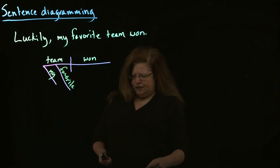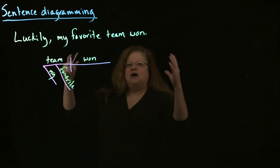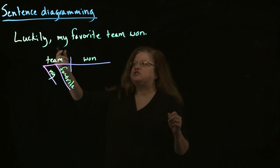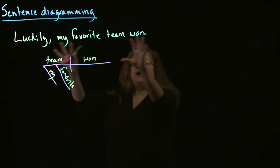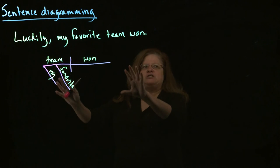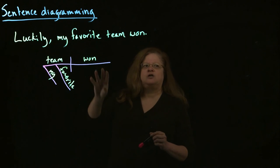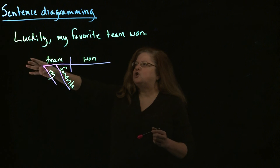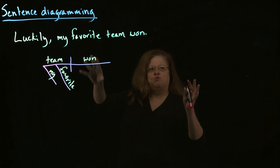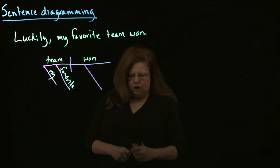And then we're left figuring out what we're going to do with this word luckily, because right now it's kind of a vague thing outside of the sentence. This particular type of adverb is known as a sentence adverb, and basically it's modifying the whole entire sentence. So what we do when we have a sentence adverb is we remember that the core, the very heart of the sentence, is the verb. So when you have a sentence adverb that's modifying the whole sentence, what we're really saying is we're modifying the verb in the sentence, because that's the core of the sentence.